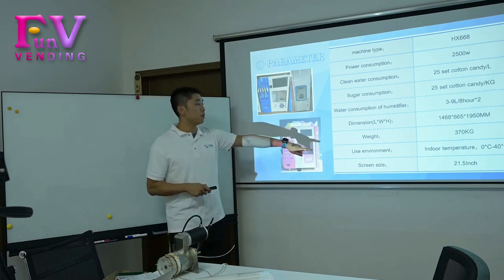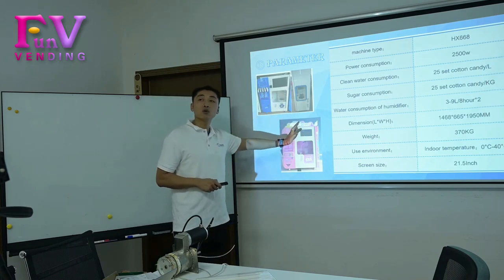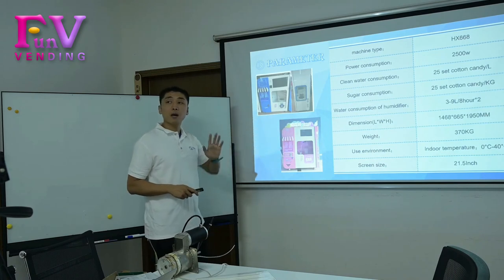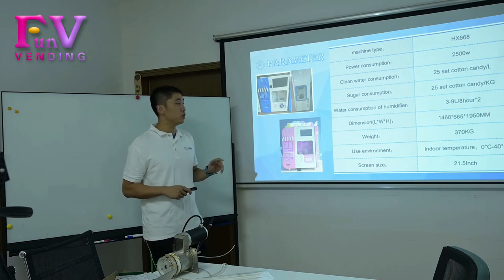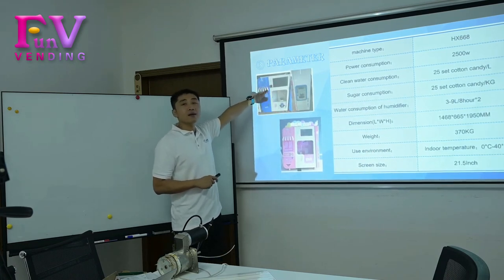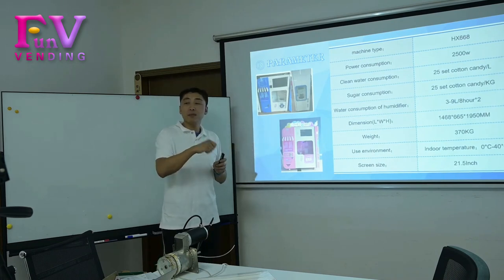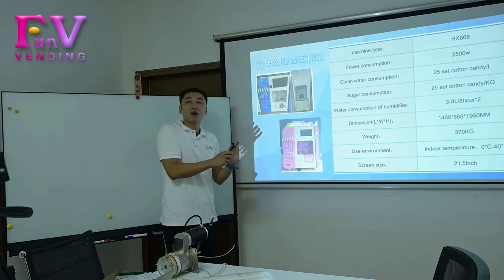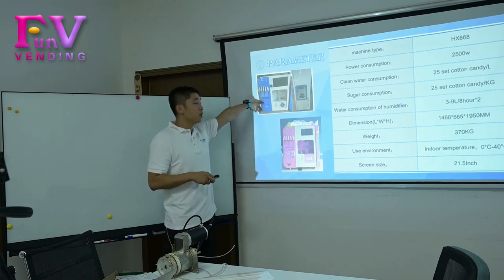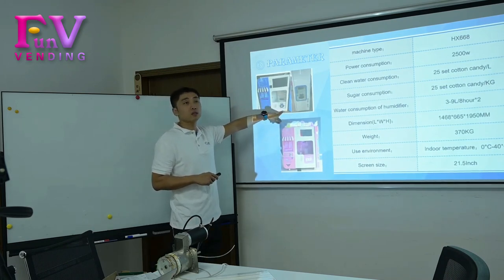Regarding the use environment, we have tested this candy cotton machine and it can be used both outdoor and indoor. The indoor operating temperature range is 0°C to 40°C. However, we would recommend placing this machine indoors, because the casing material is iron — approximately 1.0 to 1.3mm thick — and indoor use provides more protection for the machine.